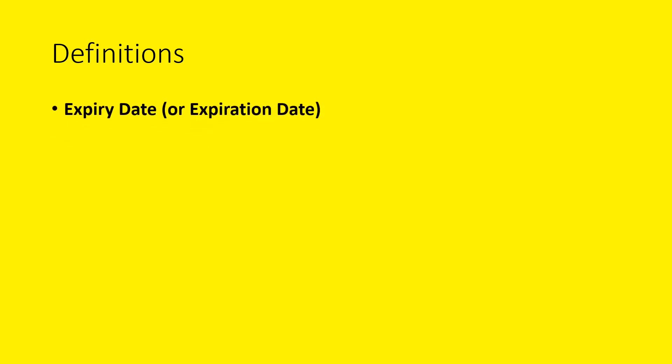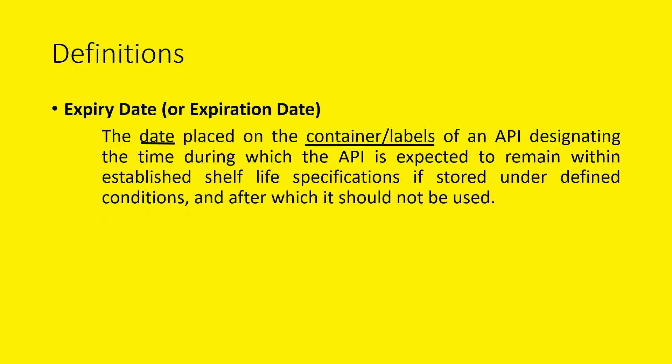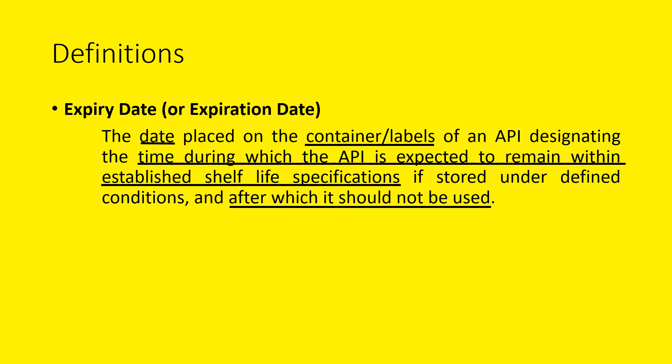The guideline says an expiry date or expiration date is the date placed on the container labels of an API, designating the time during which the API is expected to remain within established shelf life specifications if stored under defined conditions, and after which it should not be used. It is the date after which it should not be used — that means it will fail by the expiry date. This date will be a part of the label and the container. Within the expiry period, the API should meet the shelf life specifications.